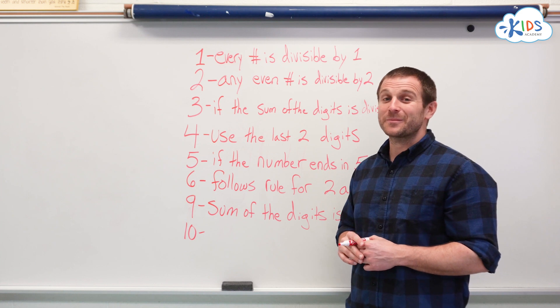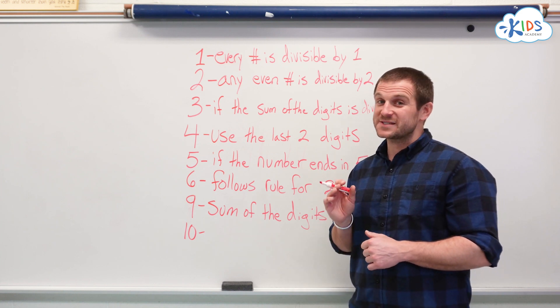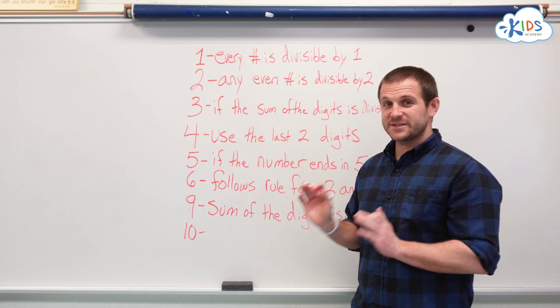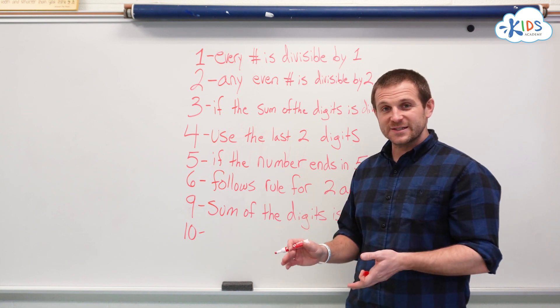Our last strategy is going to be for the number 10. The number 10 probably has the simplest divisibility rule of them all. If the number you're looking at ends in a 0, it's divisible by 10. If it doesn't, it's not.